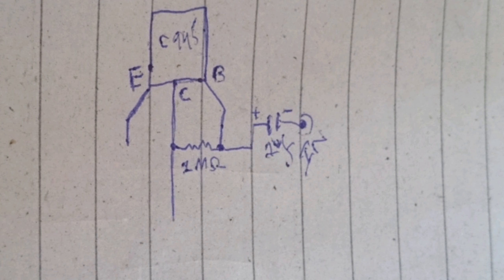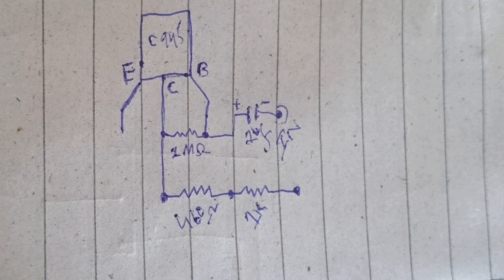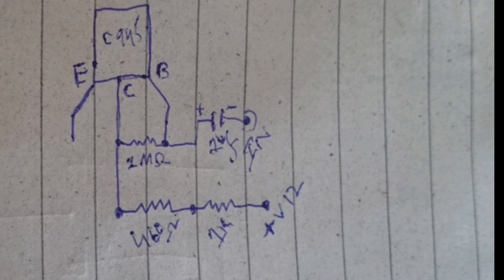If you want, you can put the minus on the inside and the plus on the outside. After that, from the collector we have to put a 460 ohm resistance, and we have to put a 1K resistor in series with it.